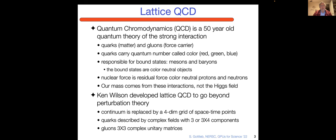Ken Wilson developed lattice QCD to go beyond perturbation theory, which doesn't work so well at low energies in QCD. The continuum of space time is replaced by a four dimensional grid of discrete points. The quarks are described by complex fields, and Wilson's brilliant insight was to describe the gluons by these unitary matrices, which are in the gauge group rather than being elements of the gauge algebra.